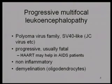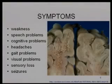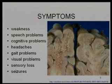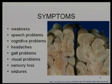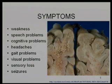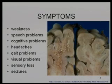PML is a non-inflammatory disease associated with demyelination of the oligodendrocytes. The myelin sheaths are being destroyed, giving a really nasty-looking picture. The symptoms are what you'd expect if you're losing brain mass: weakness, speech problems, cognitive problems, headaches, problems walking, problems seeing, sensory loss, and seizures — all very miserable but not terribly specific to any particular disease.